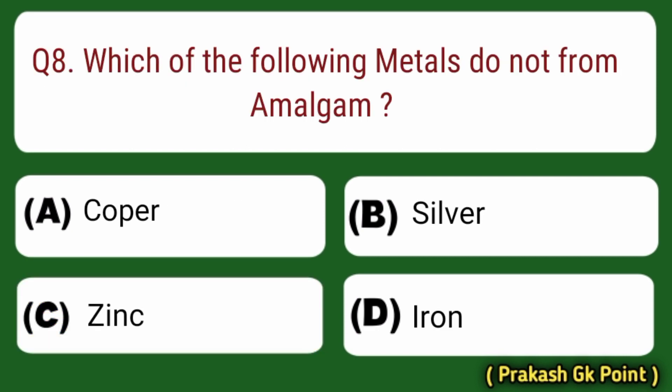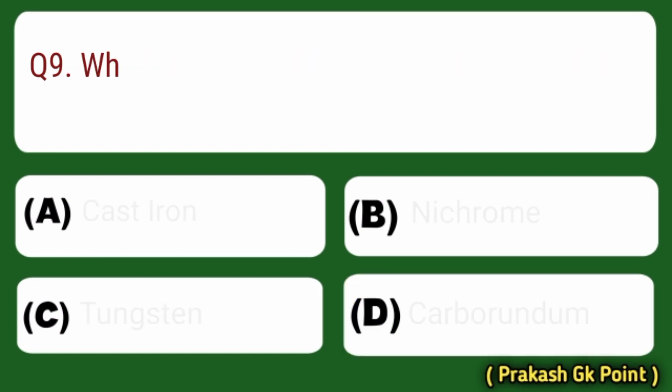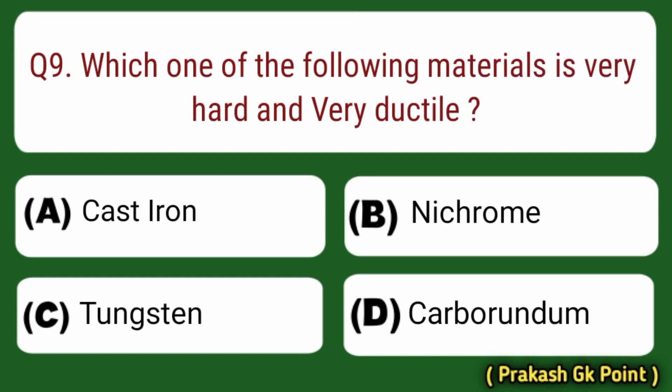Next question: which of the following metals does not form amalgam? Answer: Option D — Iron.